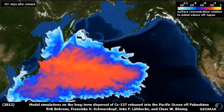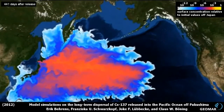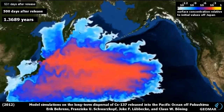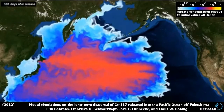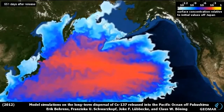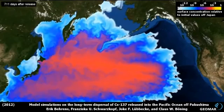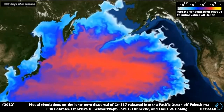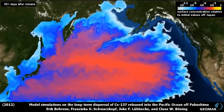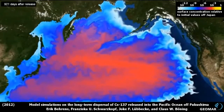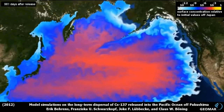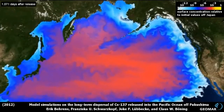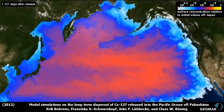After one year, maximum concentrations are diluted by two orders of magnitude and have already crossed the dateline, further heading east. The southern edge of the tracer cloud reaches the Hawaiian islands after about two years, while the northern edge has begun to enter the Bering Sea. Meanwhile, concentrations near Japan have been dropping significantly due to replacement by less contaminated waters through the Kuroshio, separating the main cloud into a northern and a southern part.